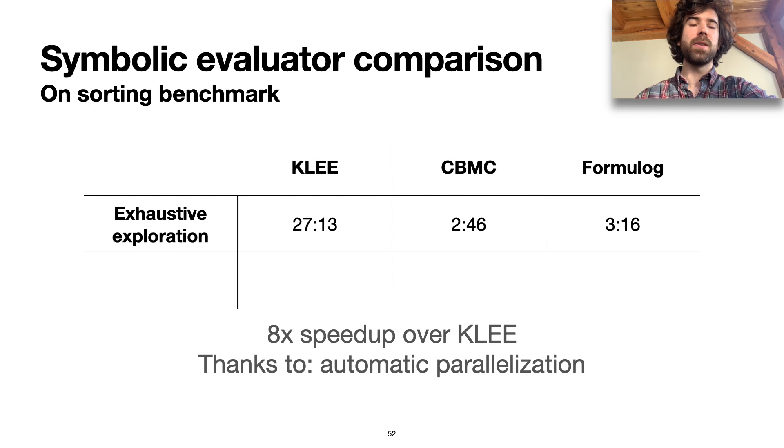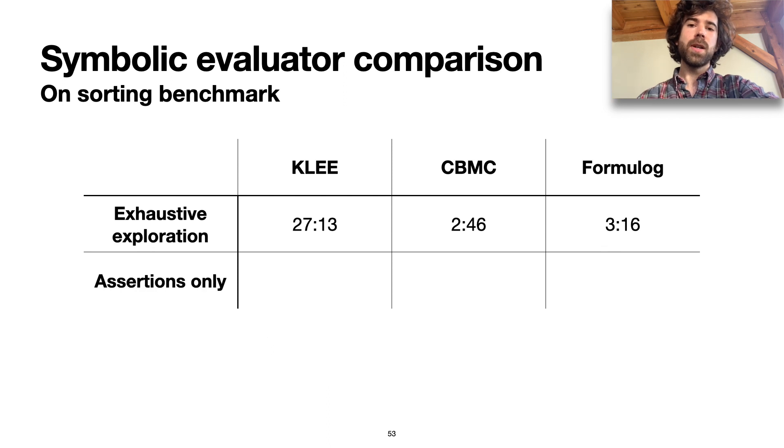So after running these tools in an exhaustive mode, we tried running them in a more goal-directed mode, where we wanted them to focus on paths leading to assertions. There's no way to do this automatically in KLEE. In CBMC, you can enable this because it supports a program slicing feature. And in Formulog, you get this by just adding a query saying that we only care about program points with assertions at them.